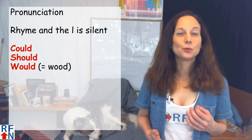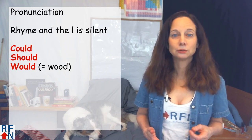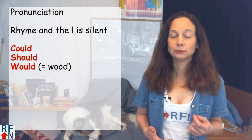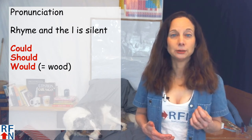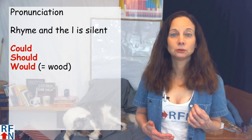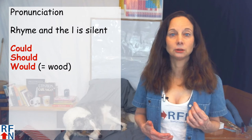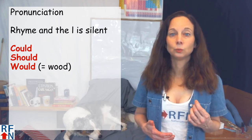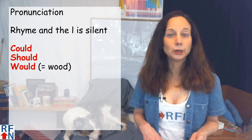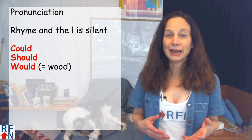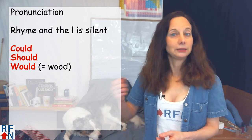Let's first go over the pronunciation of these three words: could, should, and would. They all rhyme and the vowel sound in the middle is 'uh', like could, should, would. The L is silent in each of those. And 'would' is pronounced exactly the same as 'wood', w-o-o-d, like that you get from trees.